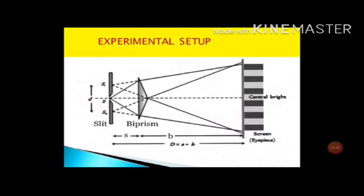Let small d be the separation between the two coherent sources S1 and S2. A screen is placed at a distance capital D from the slit. Let small a be the distance between the slit and the biprism, and small b be the distance between the biprism and the screen, so capital D equals A plus B. The waves from S1 and S2 interfere in the region shown by the triangles, producing an interference pattern on the screen with a central maxima and alternate dark and bright fringes on both sides.